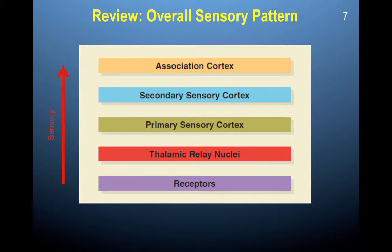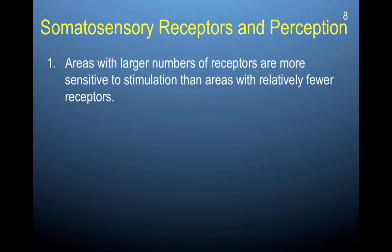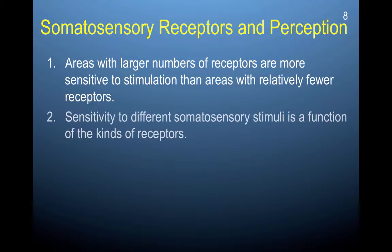Sensation travels from receptors to the thalamus up to the primary and secondary cortices. There are different types of receptors. Areas with larger numbers of receptors are far more sensitive to stimulation than areas with relatively fewer receptors — your hands, mouth, lips, and tongue have a huge number of receptors for greater sensitivity. Because you have more receptors in these areas, you also have more neurons that process this and a greater representation of these areas within the brain.